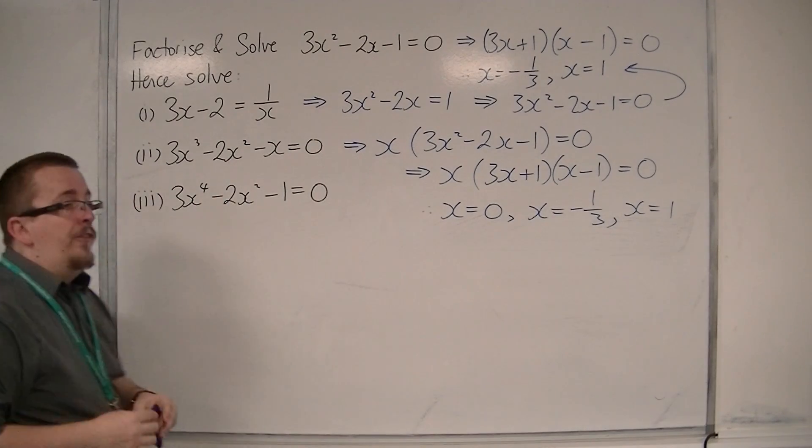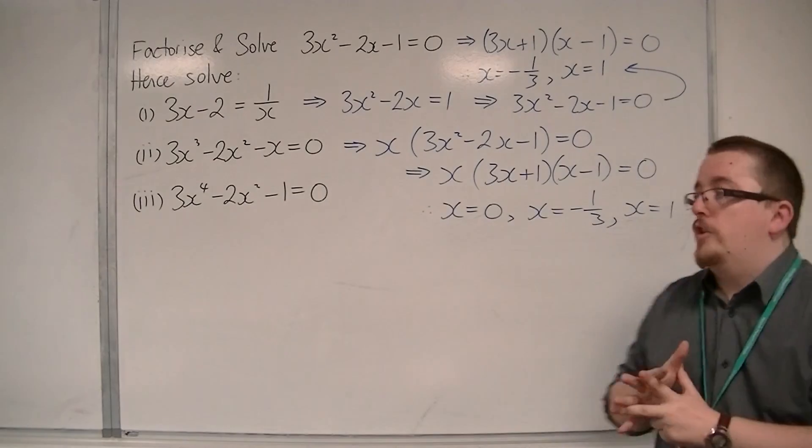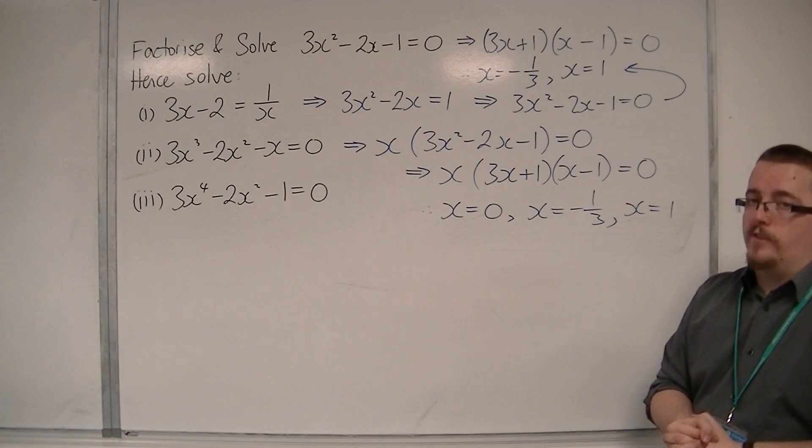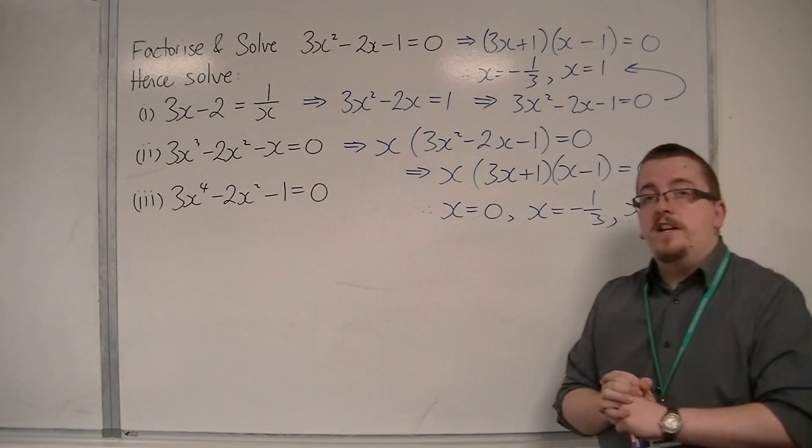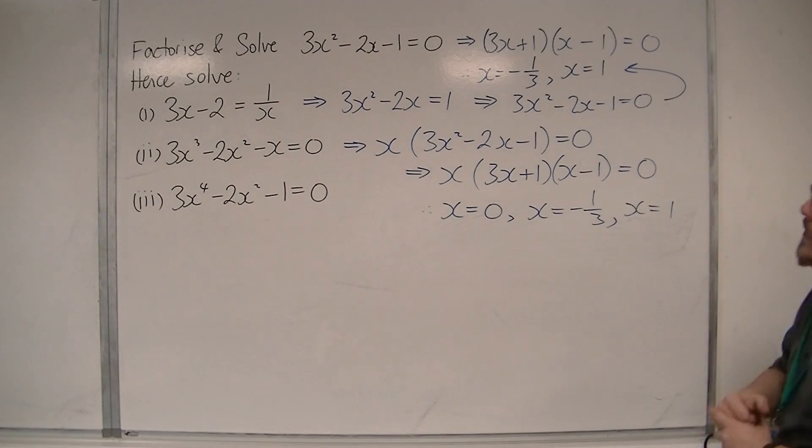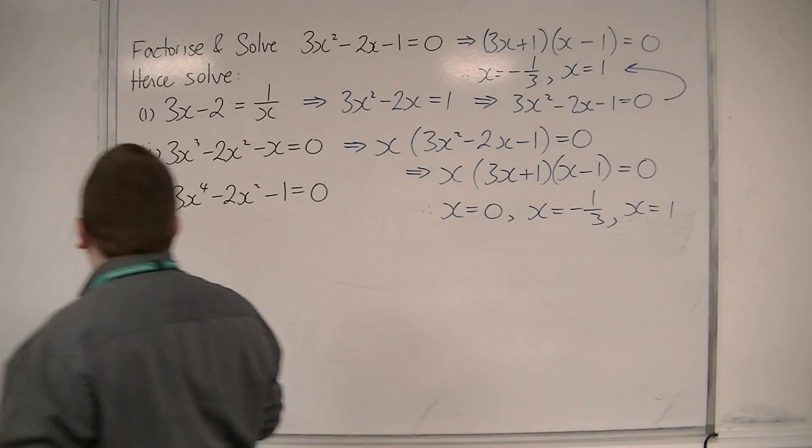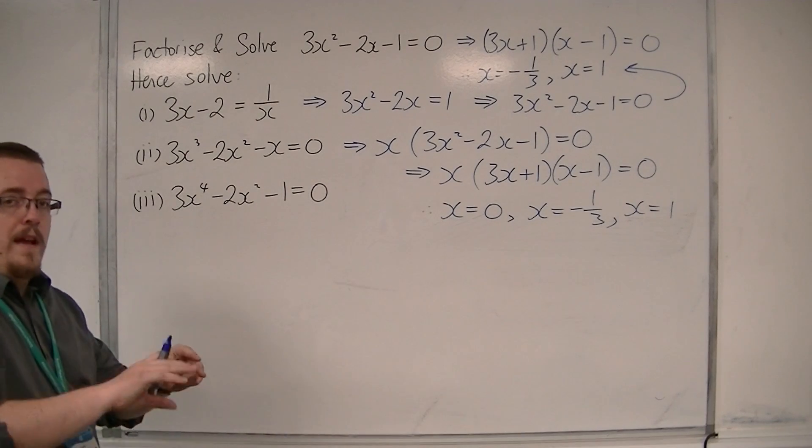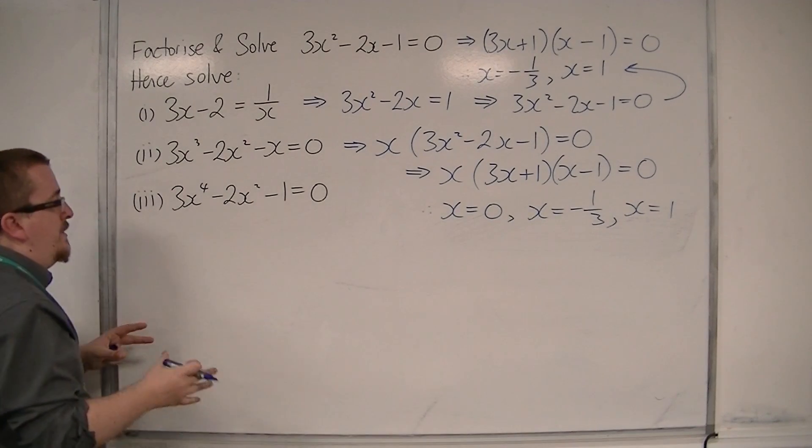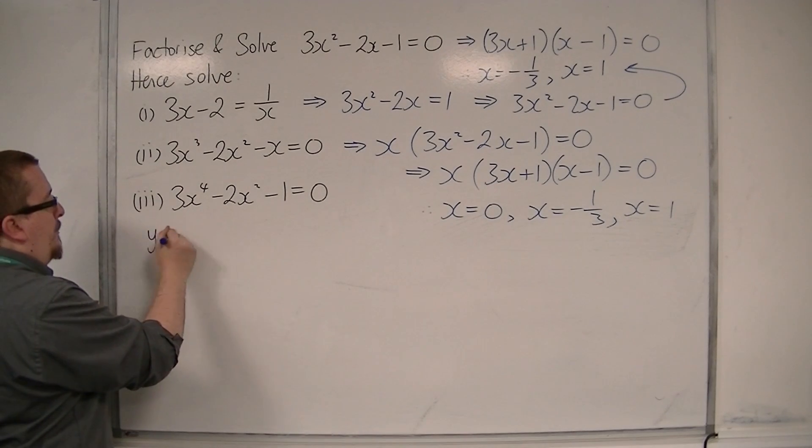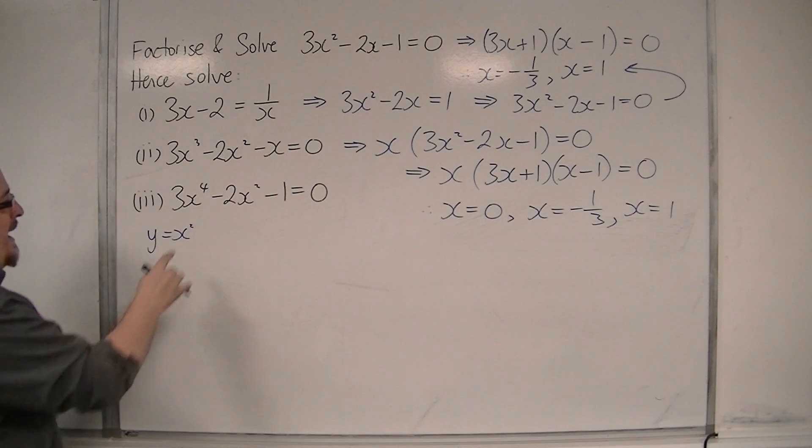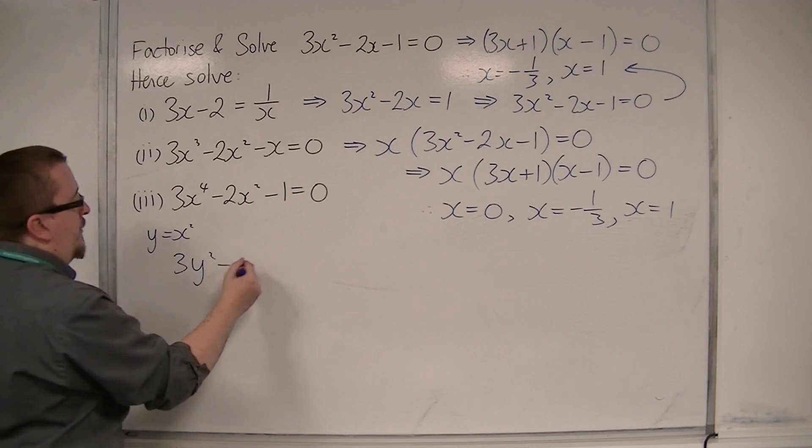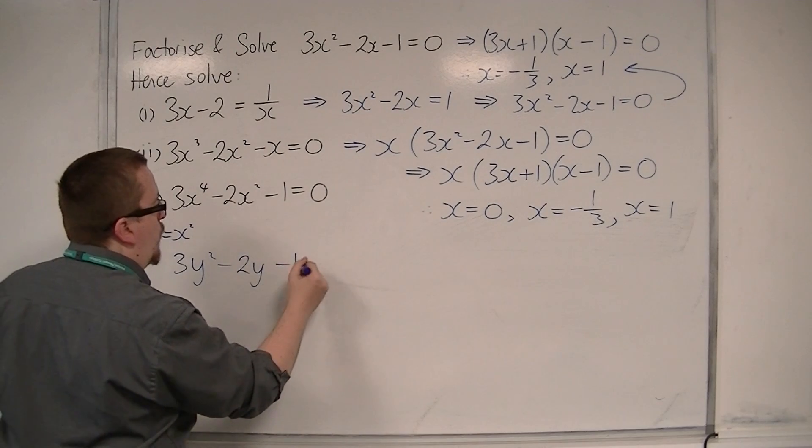Finally, we have this one. This quartic equation, or quartic equation, this x to the 4. In general, quartic equations are very challenging to solve. However, we can use what we know from what we've done previously in order to solve it. Effectively, this can be factorised. If you imagine that I'm going to let x squared be y, so I'm going to make a little substitution here. x to the 4 is just x squared squared, so that's 3y squared. Take away 2y, take away 1 is 0.